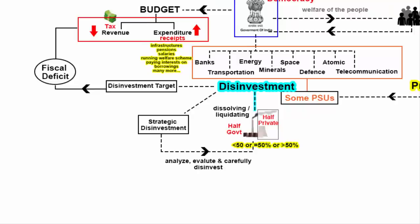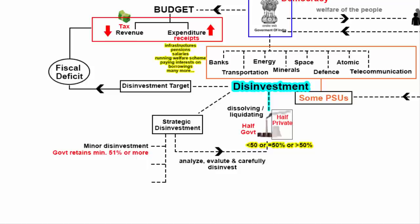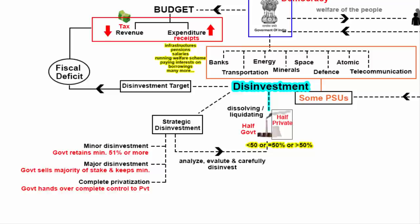Strategic disinvestment can be approached in three ways. First, minor disinvestment: the government gives away a portion of its stake but retains a majority stake, preferably at 51%, in order to retain management control. Second, major disinvestment: the government sells off the majority of its stake and retains minor holdings in the company. Third, complete privatization: the government hands over complete control of its holdings to a private player.